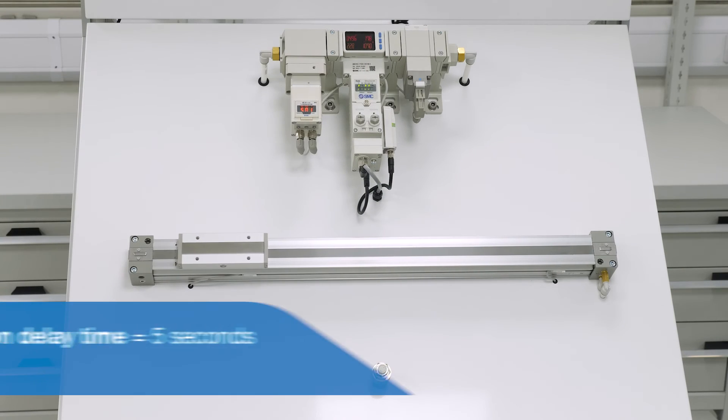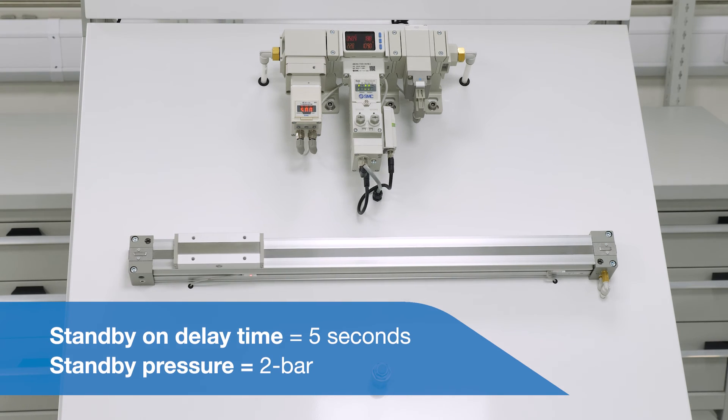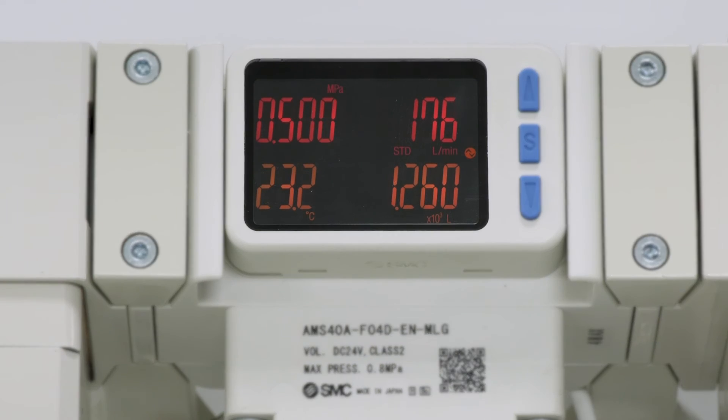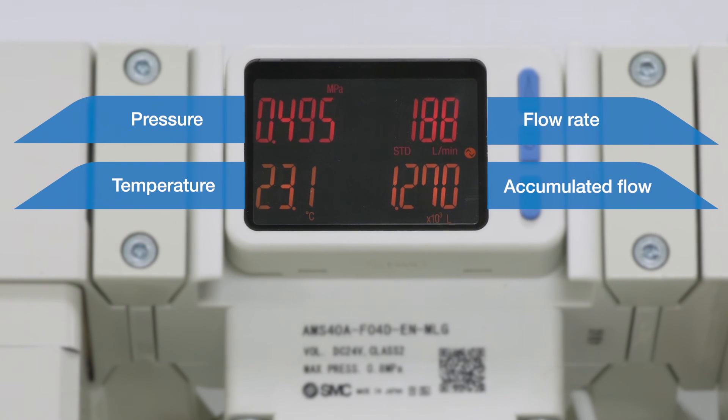In this example, the standby on delay time has been set to 5 seconds. The standby pressure has been set to 2 bar. The display shows current pressure, flow rate, temperature, and accumulated flow values, all of which can be monitored remotely.